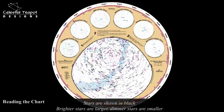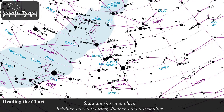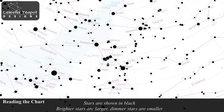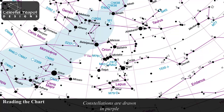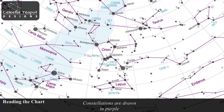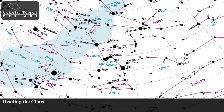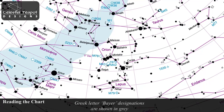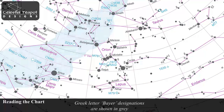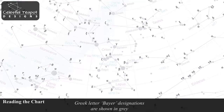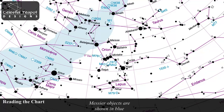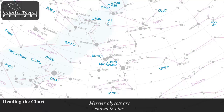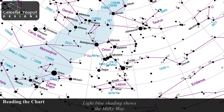Stars on the chart are shown in black. The brighter stars will appear larger, dimmer stars are smaller. The constellation lines are shown on the chart in purple. Common names for prominent stars are shown in black. Greek-lettered Bayer designations are shown in gray. Messier objects and NGC objects are shown in blue. Light blue shading shows the path of the Milky Way.